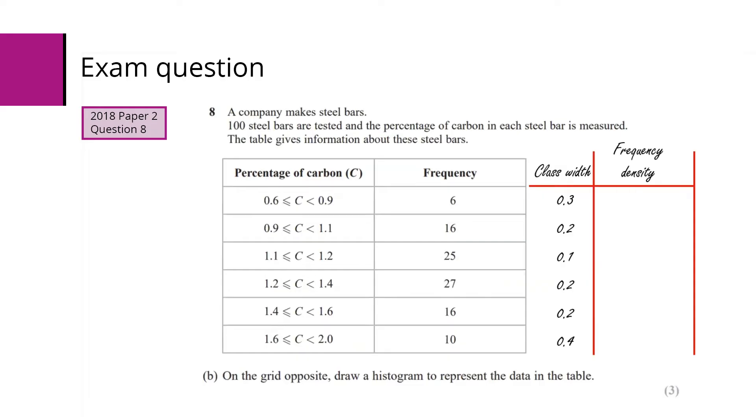Following on from that we'd want to add in our frequency density column. Frequency density is frequency divided by class width, so 6 divided by 0.3, again that's the one we did in part A, but it's 20. Next one's going to be 16 divided by 0.2, or 80, and then just following it through for the other ones. 25 divided by 0.1 is 250, that's our highest value, but we've done all of the frequency densities there.